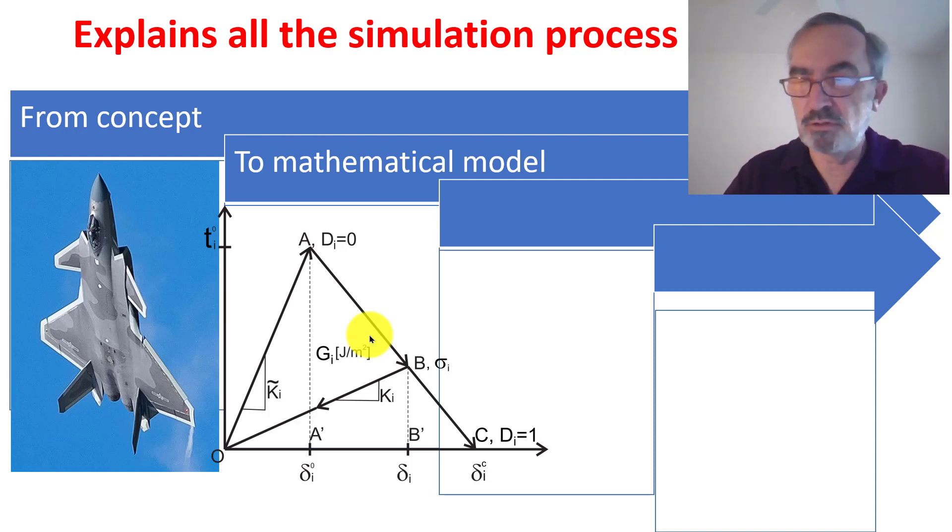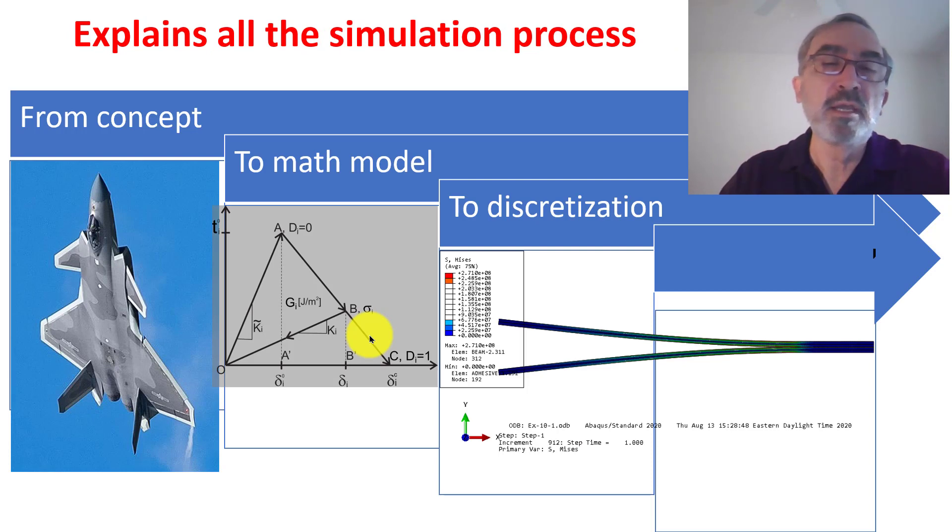So in the next step, you want to solve that model. And so you do a discretization. Here's a discretization of the double cantilever beam test, which is used to evaluate the adhesion, if you use a bonding, or delamination of a laminated composite.